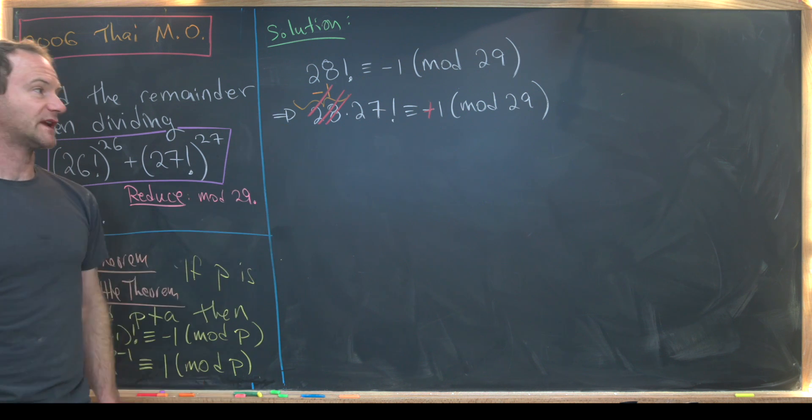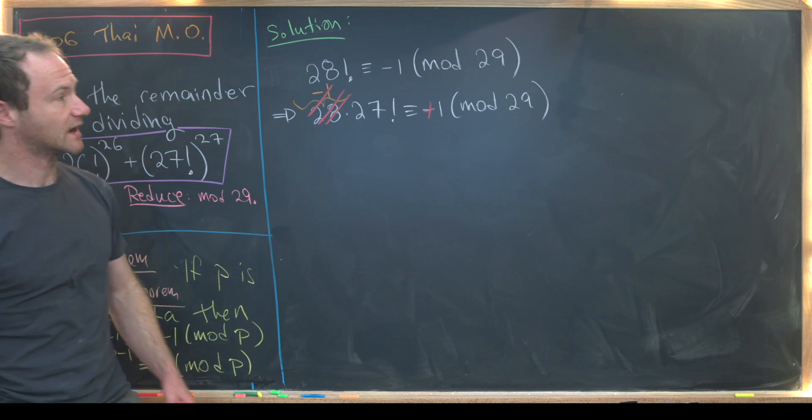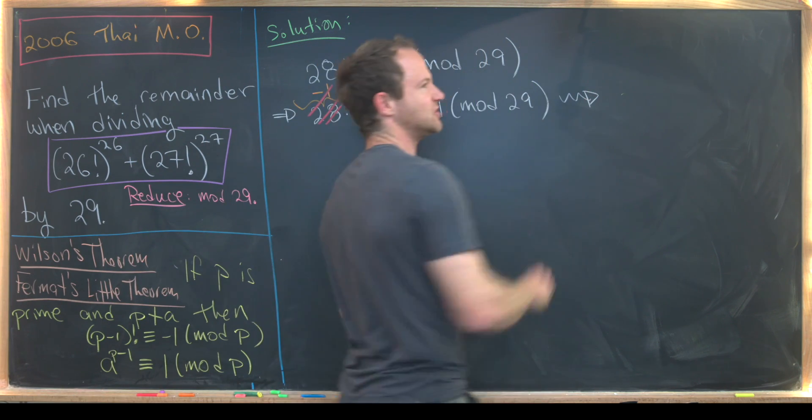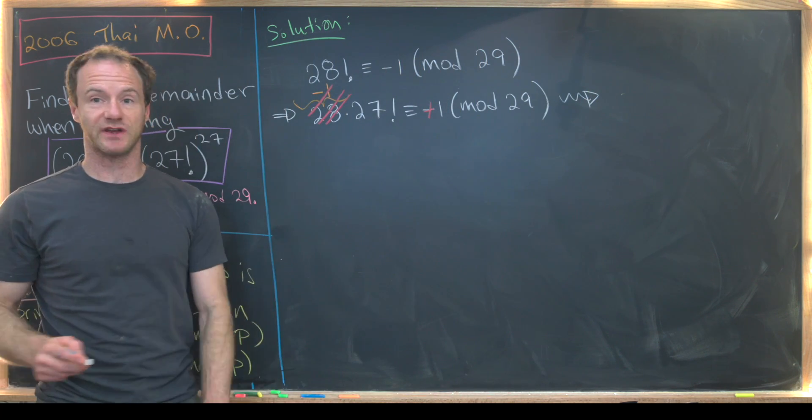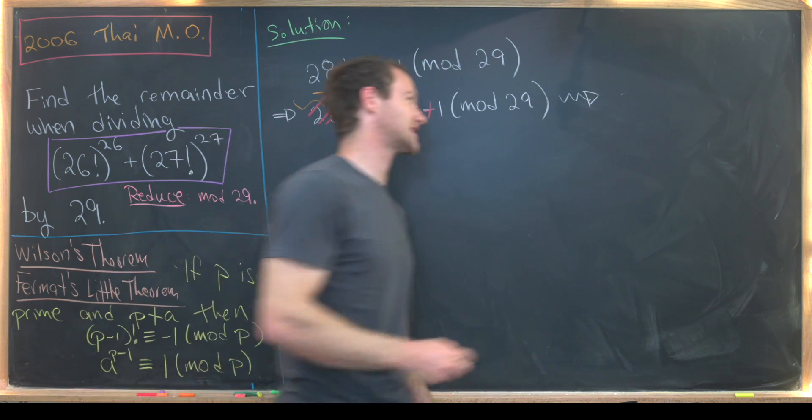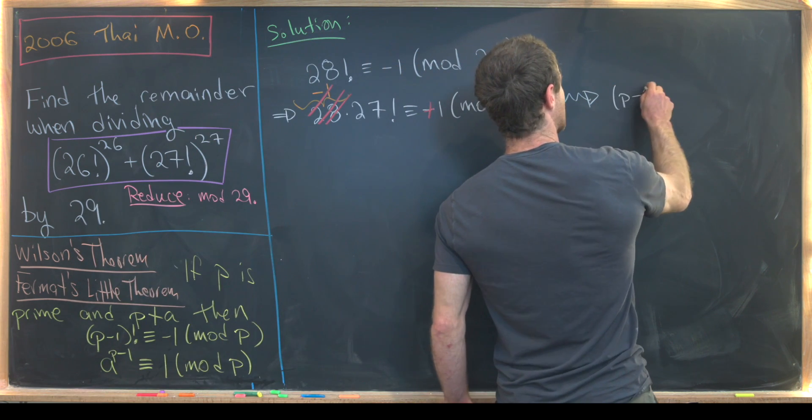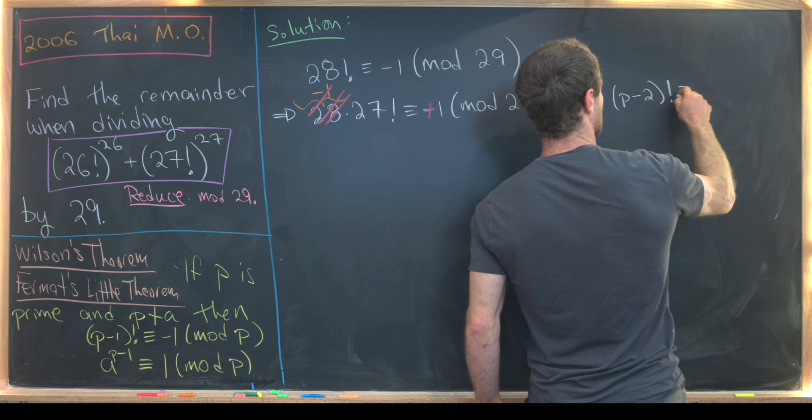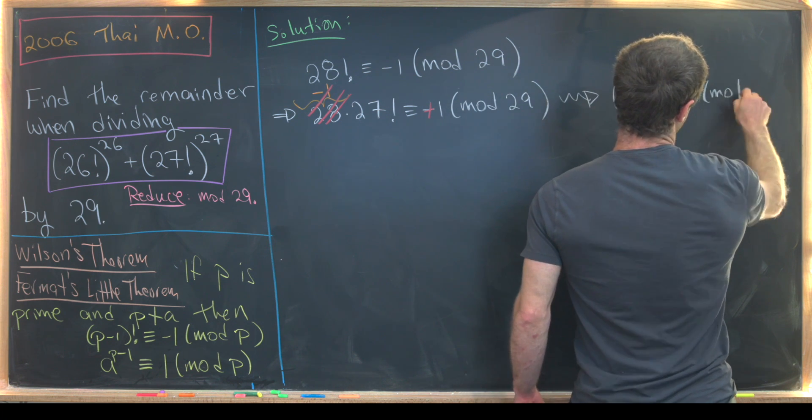Leaving us with 27 factorial is congruent to 1 mod 29. And this is actually often generalized in an elementary number theory class, as p minus 2 factorial is congruent to 1 modulo p.